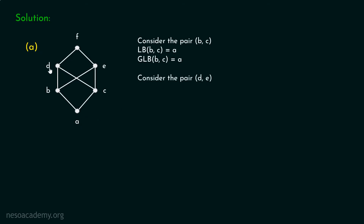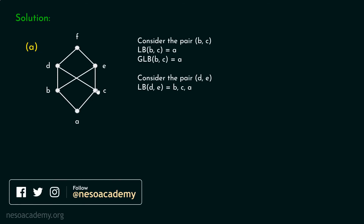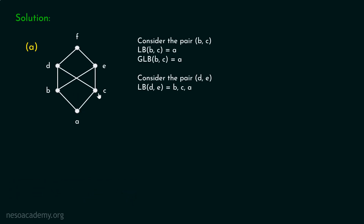Let's consider the pair d, e. The lower bounds of d and e are b, c, and a. You can see the meeting points c, a, and b. Therefore, lower bounds of d and e are b, c, and a. Now we have to identify the greatest lower bound out of these lower bounds. You can clearly see that there is no greatest lower bound of d and e — you have to see the first meeting point of d and e. They meet at this point and also at this point at the same time. These are the two first meeting points. Therefore, greatest lower bound of d and e does not exist — it is phi. Therefore, the given Hasse diagram is not a Meet Semilattice.